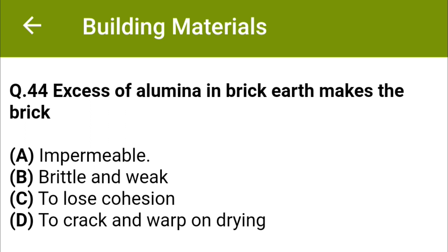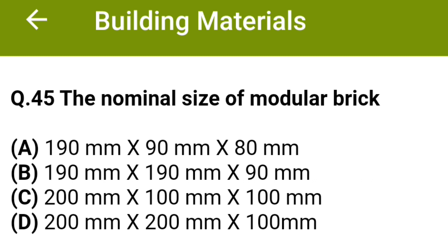The nominal size of a modular brick: option A 190 mm × 90 mm × 80 mm, option B 190 mm × 190 mm × 90 mm, option C 200 mm × 100 mm × 100 mm, option D 200 mm × 200 mm × 100 mm.